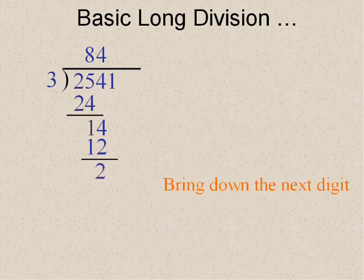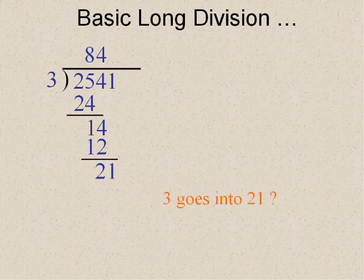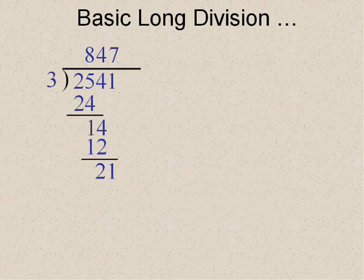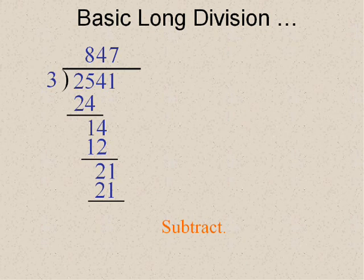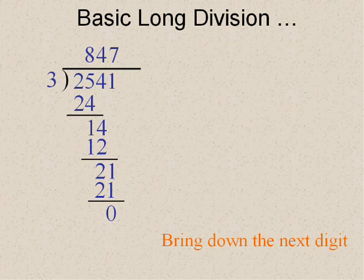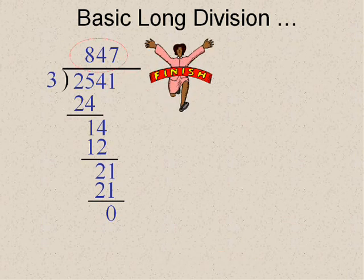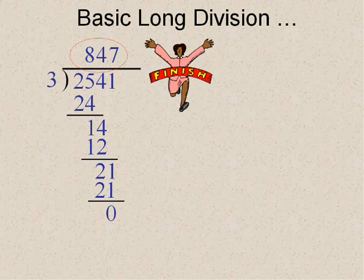Starting to get repetitious isn't it? Then I brought down the next digit and once again made a guess. Three into twenty-one went in seven times. I wrote the seven. I multiplied and I subtracted. And in this case I got zero. And I bring down the next digit but there wasn't a next digit so I knew I was done. That was pretty easy. Hopefully you remembered how to do that.